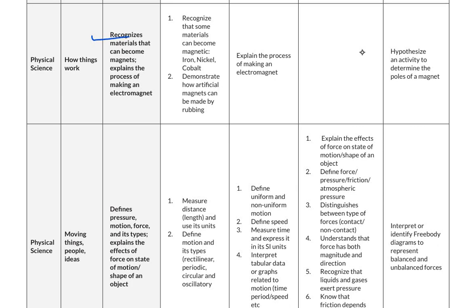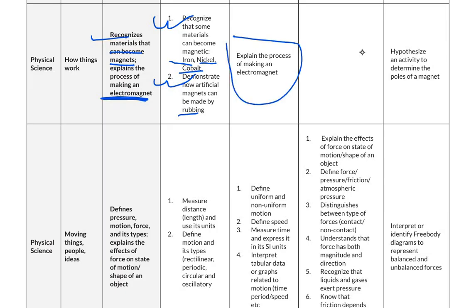The next competency is to recognize materials that can become magnets and explain the process of making an electromagnet. For below basic level, students recognize that some materials can become magnetic, such as iron, nickel or cobalt, and demonstrate how artificial magnets can be made by rubbing. For basic level, they explain the process of making an electromagnet. For advanced level, they hypothesize an activity to determine the poles of a magnet.